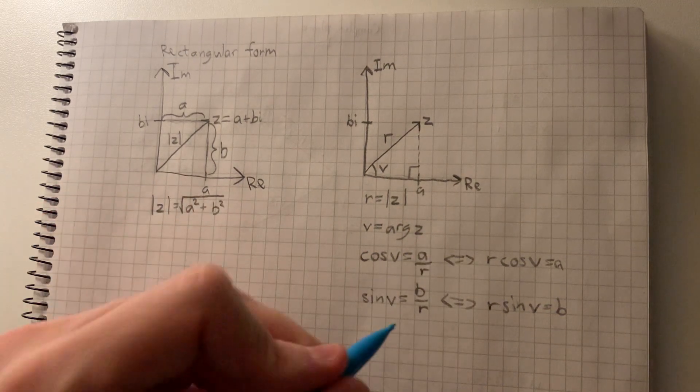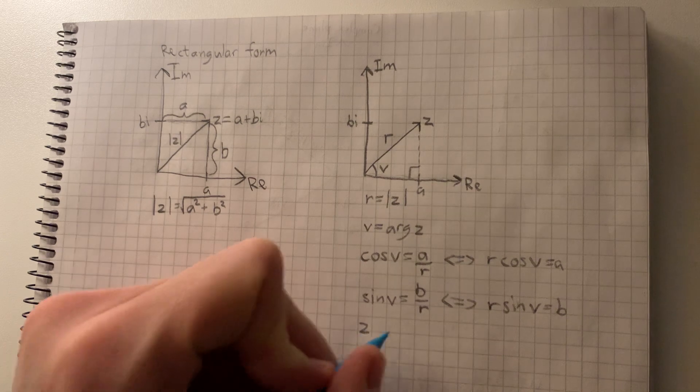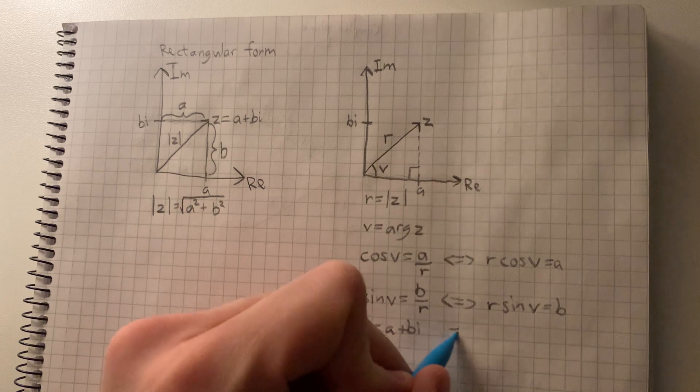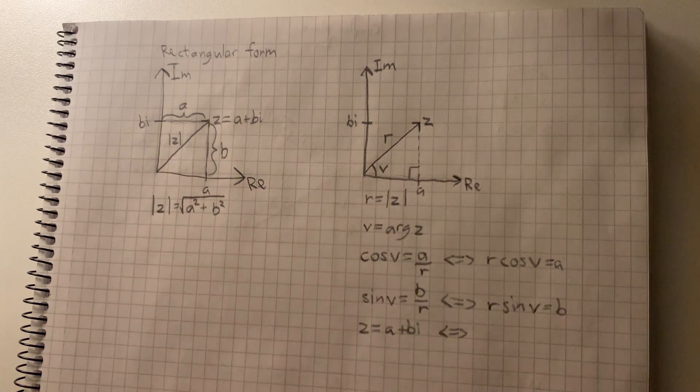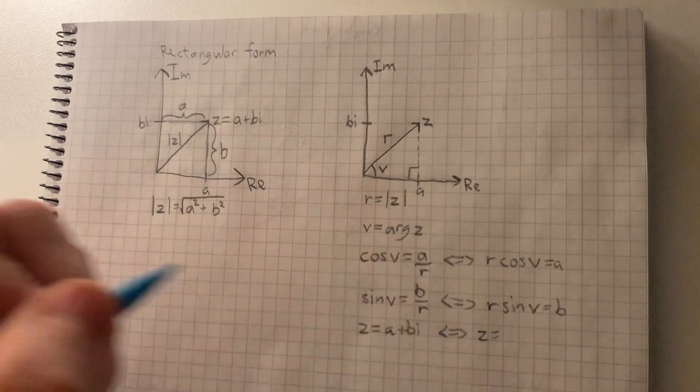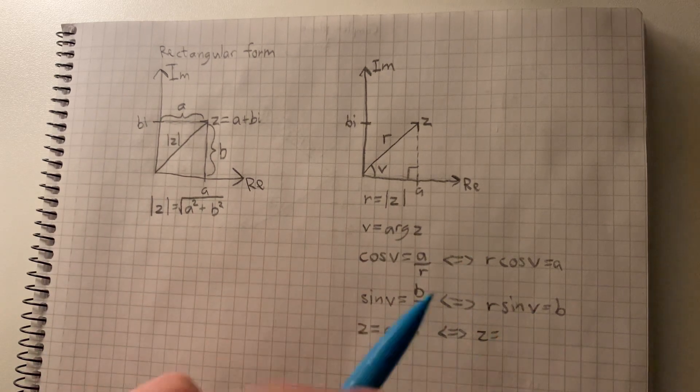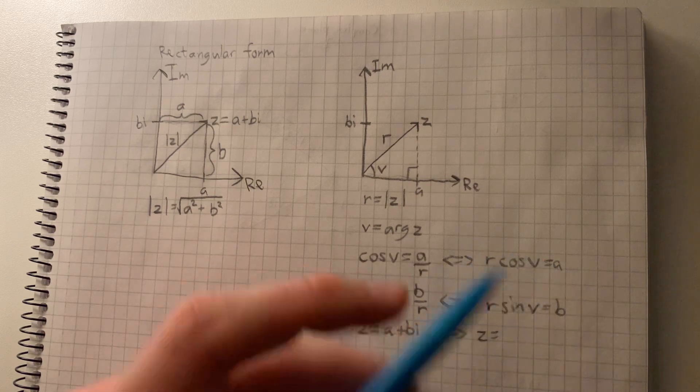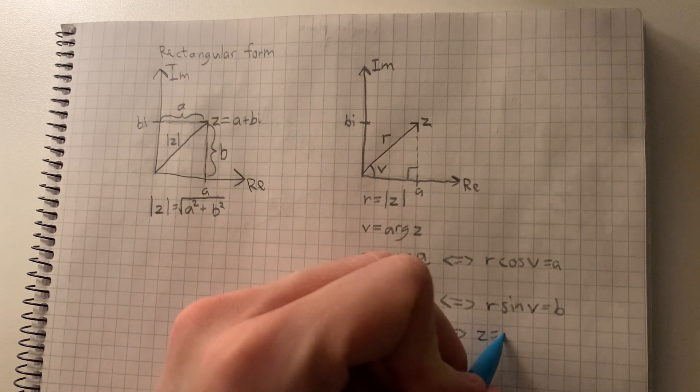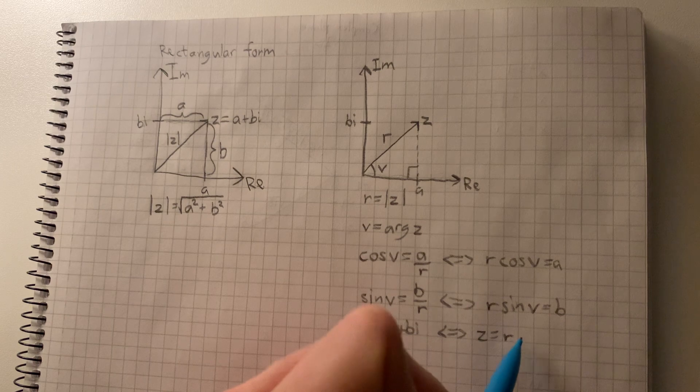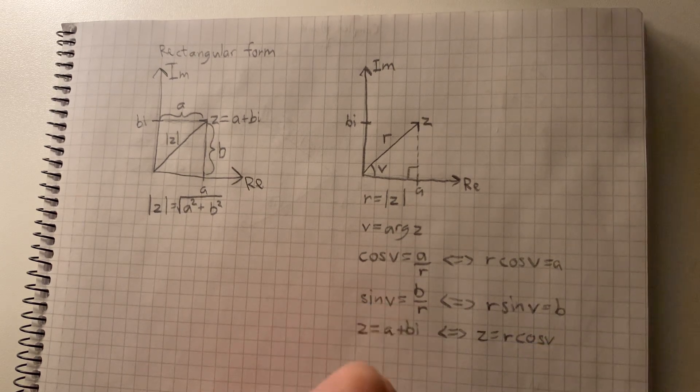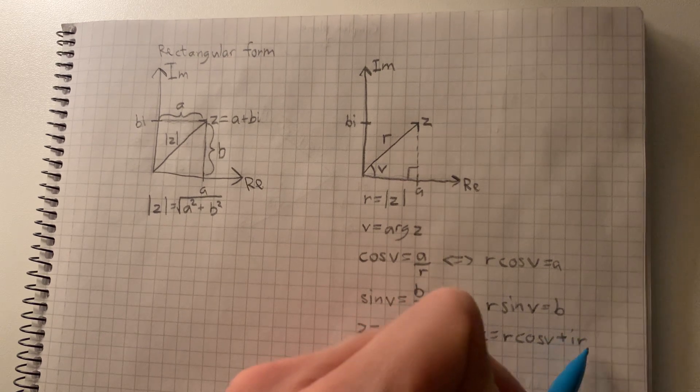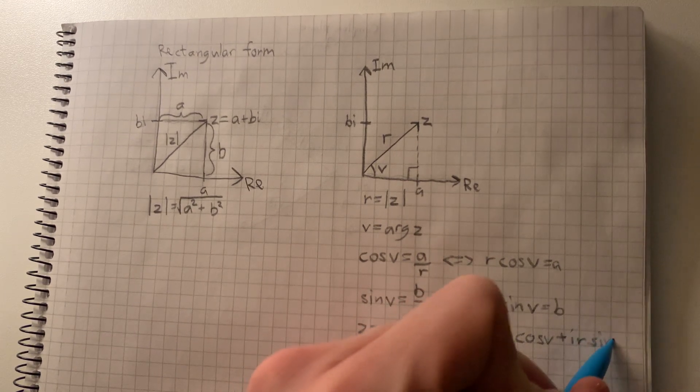If we now rewrite our set, we get that z is equal to—if we substitute b with this and a with this—R cosine V plus i times R sine V.